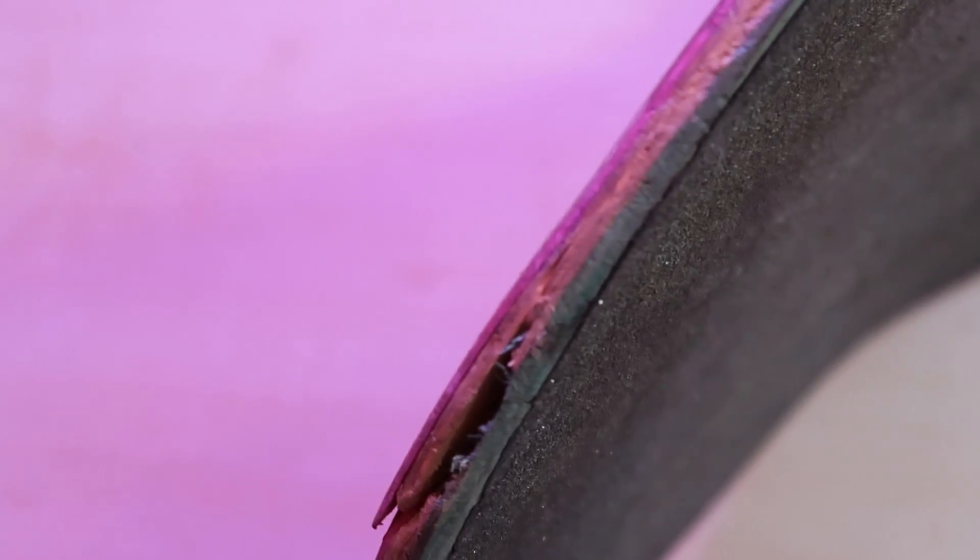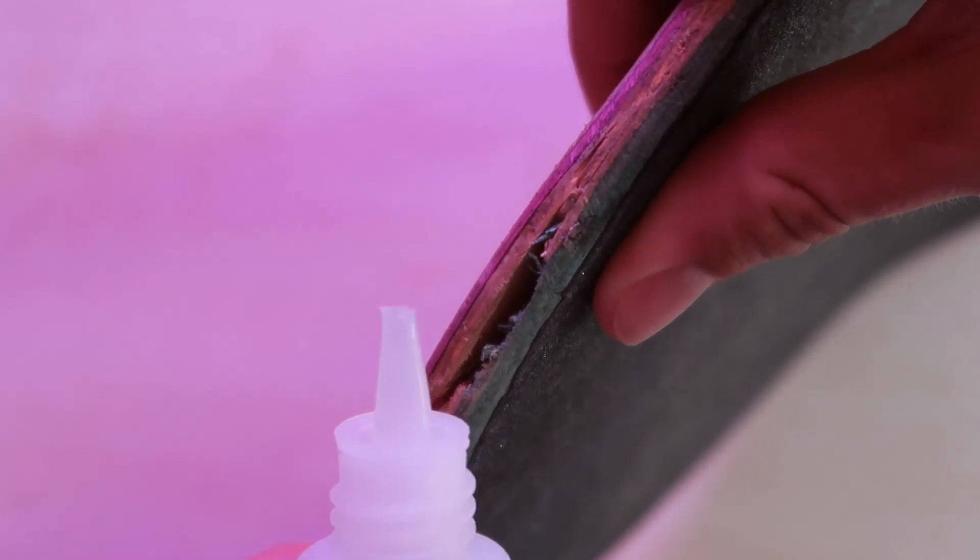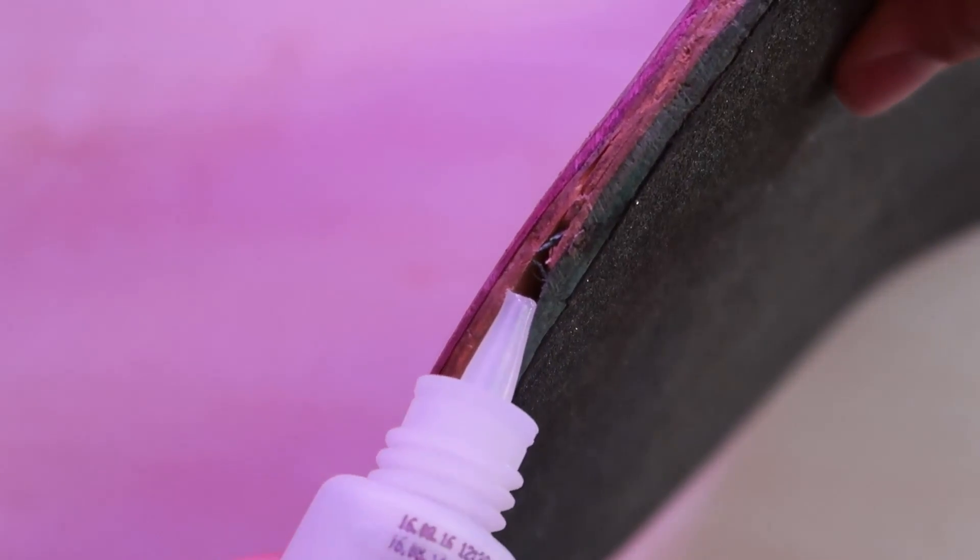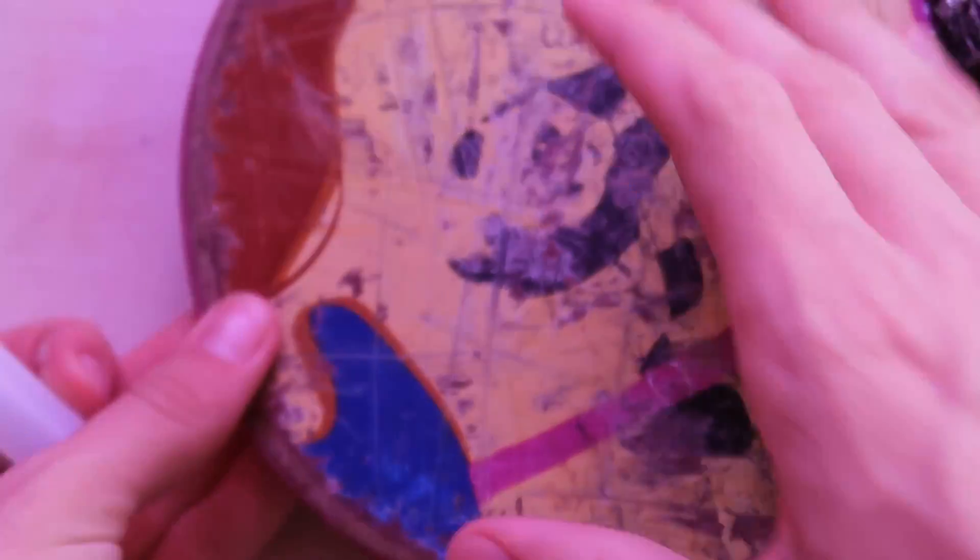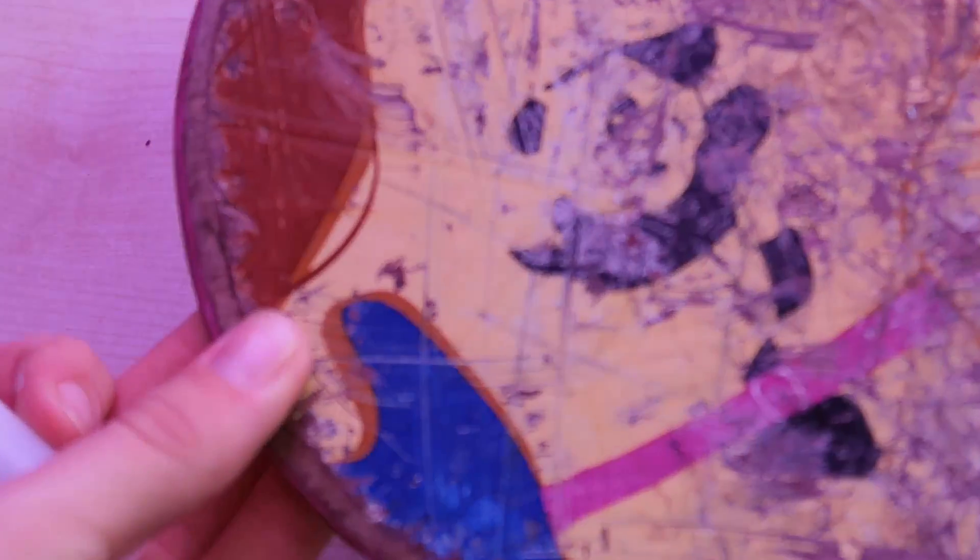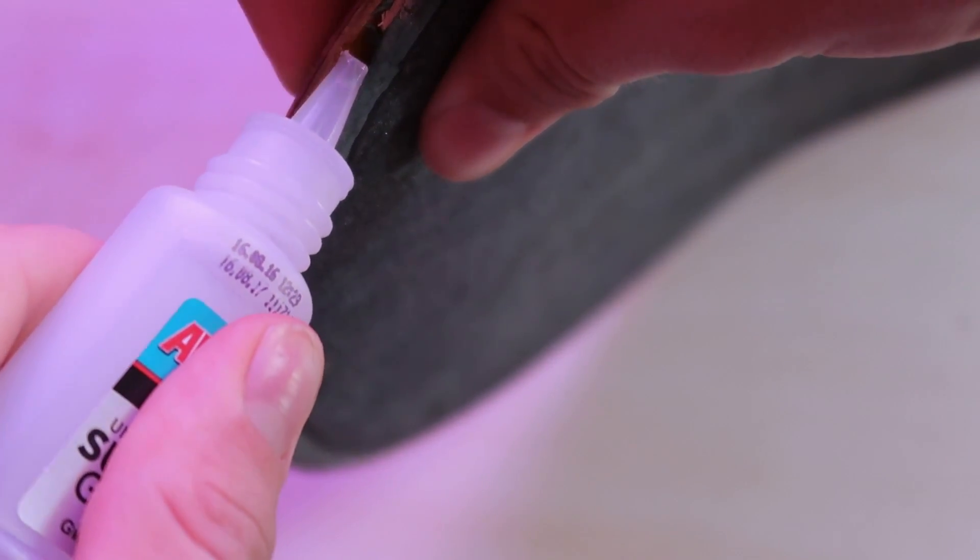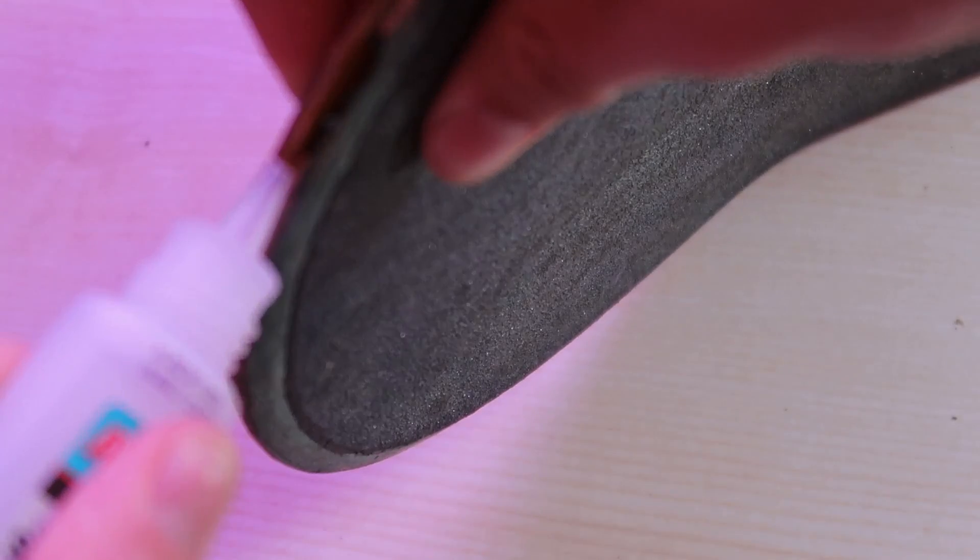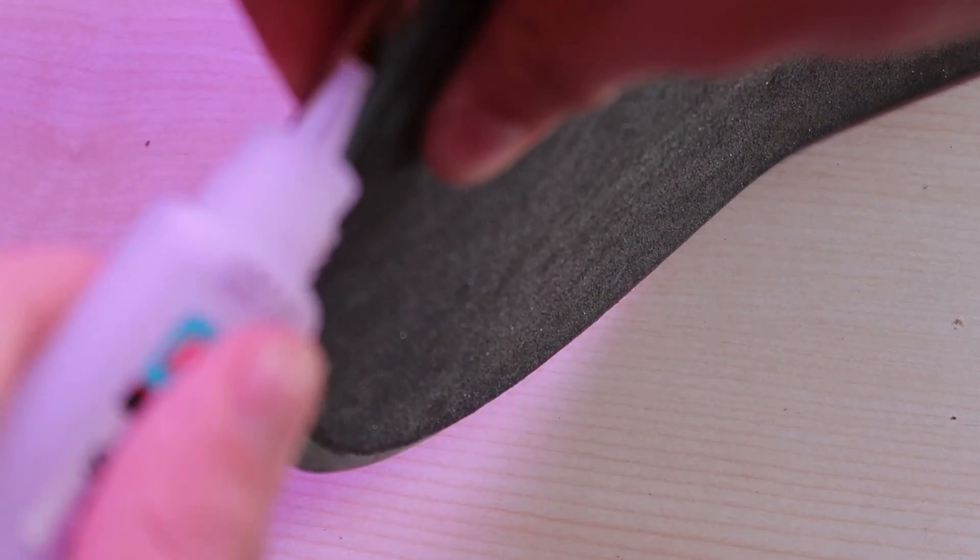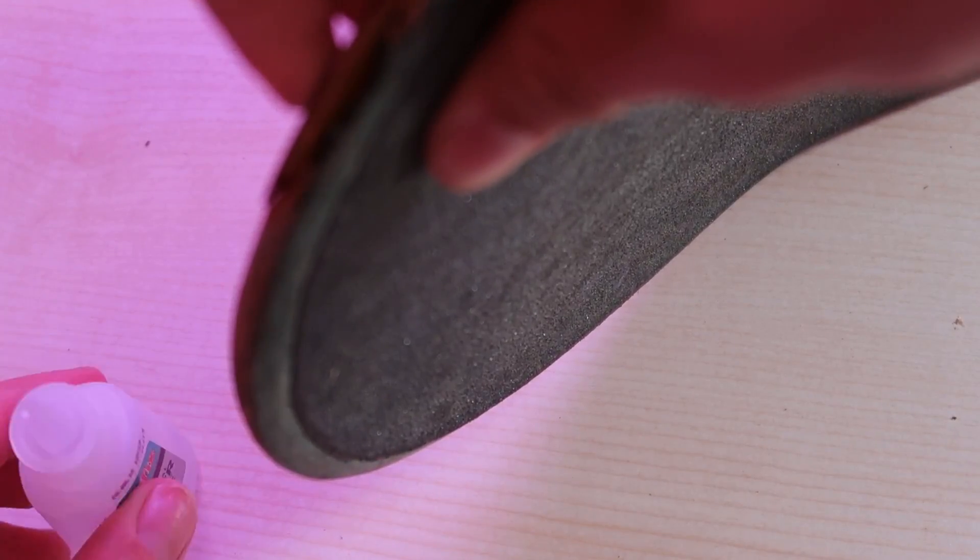So what I recommend you to do is pour the super glue in, and then press down the board. Pour some super glue in and press on the board as hard as you can until the super glue is dried.